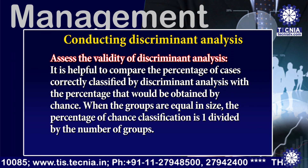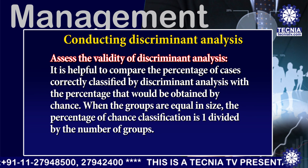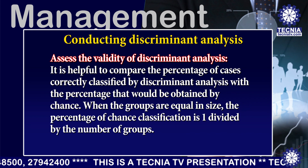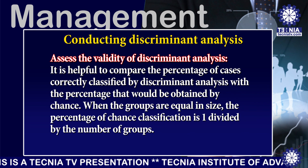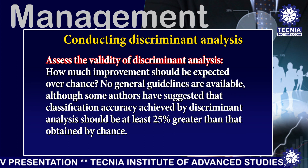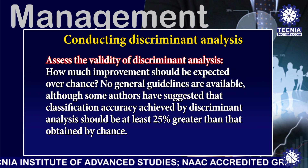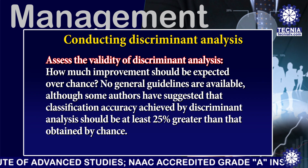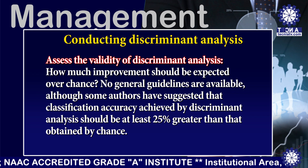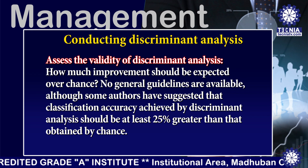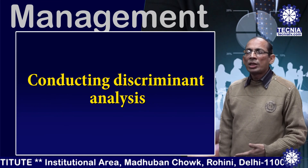It is helpful to compare the percentage of cases correctly classified by discriminant analysis with the percentage that would be obtained by chance. When the groups are equal in size, the percentage of chance classification is 1 divided by the number of groups. No general guidelines are available, although some authors have suggested that classification accuracy achieved by discriminant analysis should be at least 25 percent greater than that obtained by chance. This concludes the lecture on the steps in discriminant analysis.